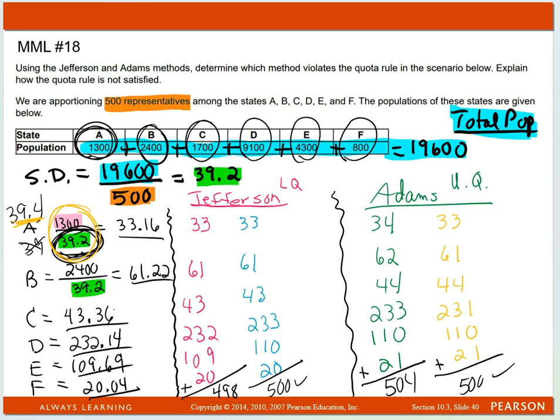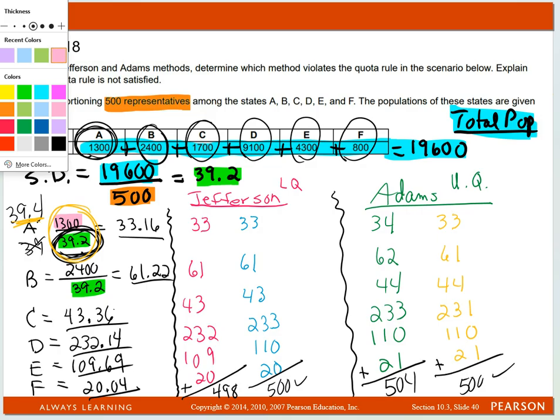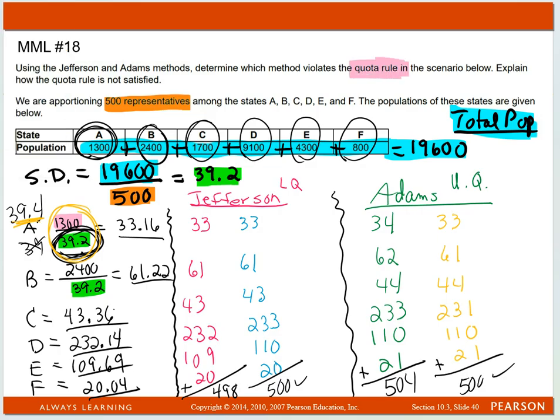Using the Jefferson and Adams methods, determine which violates the quota rule. Now if you remember, the quota rule says that when you divide, you have to pick the value. Like with 33.16, that means I had to pick between 33 or 34.